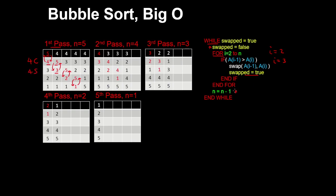And n gets decremented from 5 to 4, so that in the next pass we only compare the first 4 numbers. Note that the next pass occurs because a number was swapped in the previous pass; otherwise the algorithm would end.